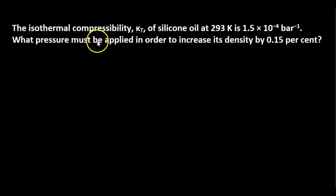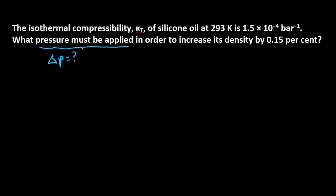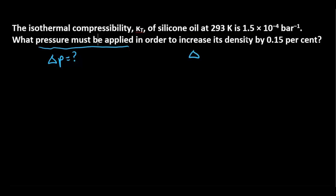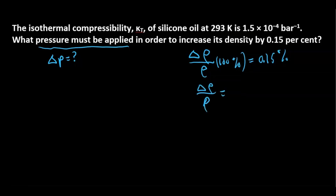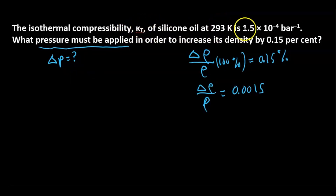We want to know the pressure that must be applied — meaning we're applying pressure on top of an initial pressure, so we want to solve for this change in pressure. We want the density to increase by 0.15%, which means the change in density over the initial density times 100% equals 0.15%. So delta-rho over rho equals 0.0015. Rho is density, P is pressure, and we're given the isothermal compressibility of silicone oil.